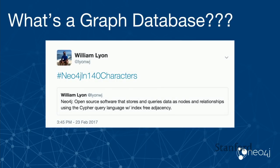Since we're talking about Twitter data, I think the best way to summarize Neo4j is in the form of a tweet. Here's Neo4j in 140 characters — I guess I could use 280 now. Neo4j: open source software that stores and queries data as nodes and relationships using the Cypher query language with index-free adjacency.